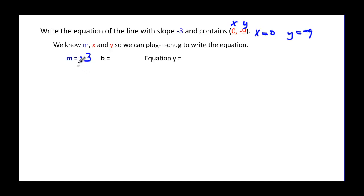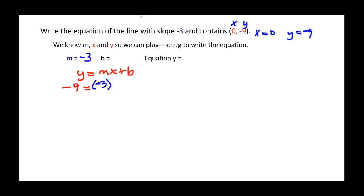So when we do that, we know that y = mx + b is the form we're working with. We plug and chug: y was negative nine, and that equals slope, which is negative three, times x, which is zero, plus b. Well, anything times zero is just zero, so we really have b is equal to negative nine.